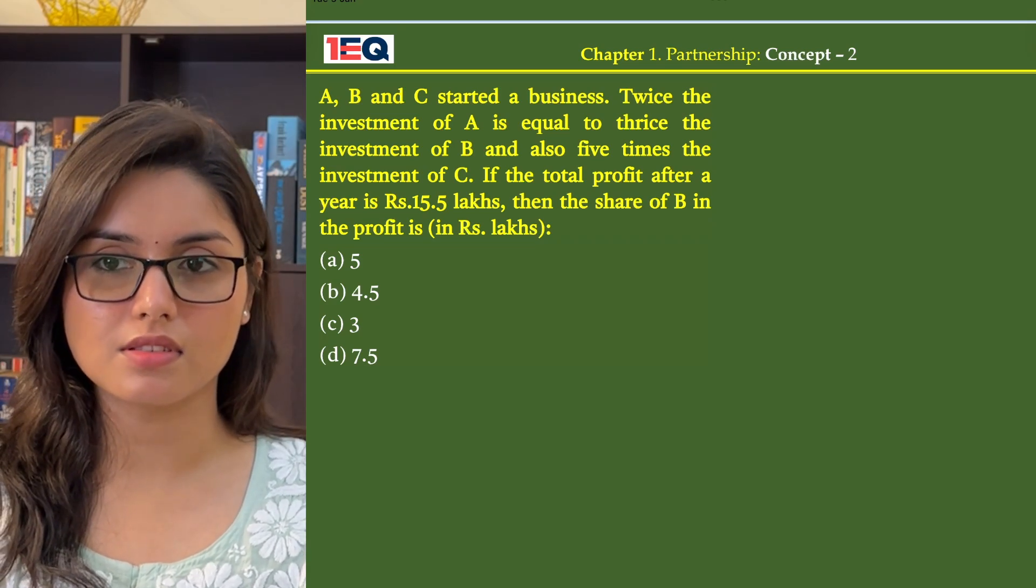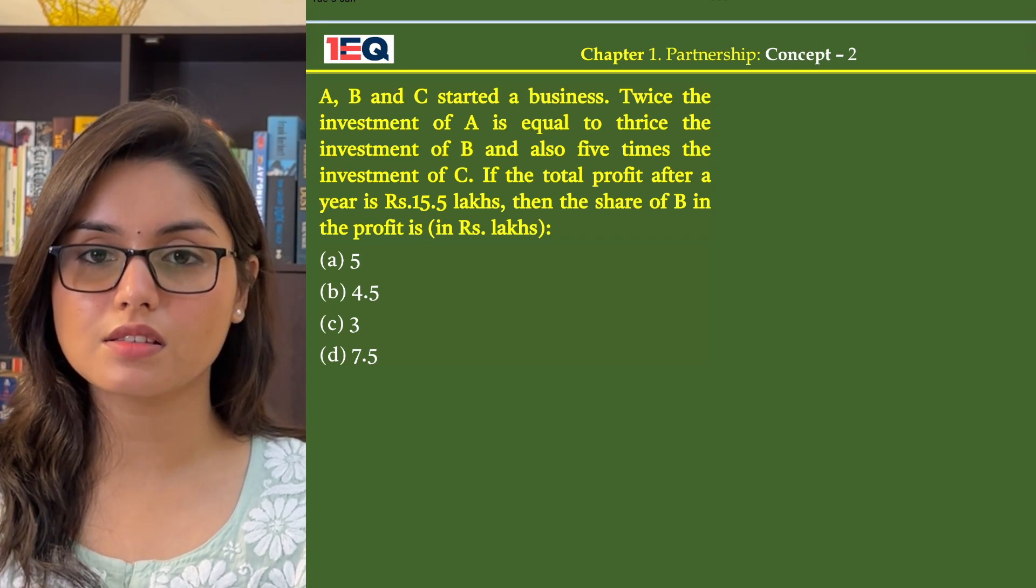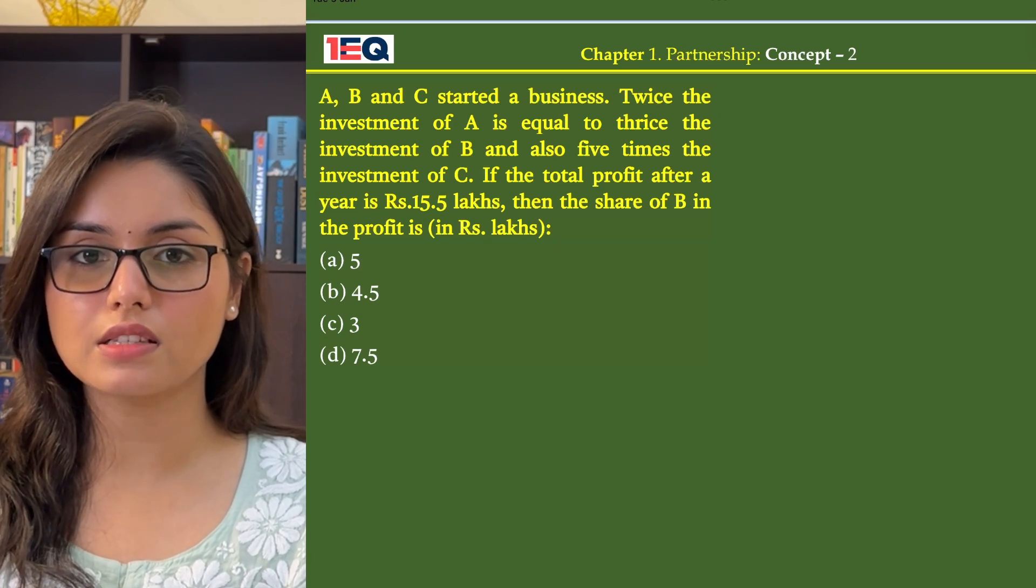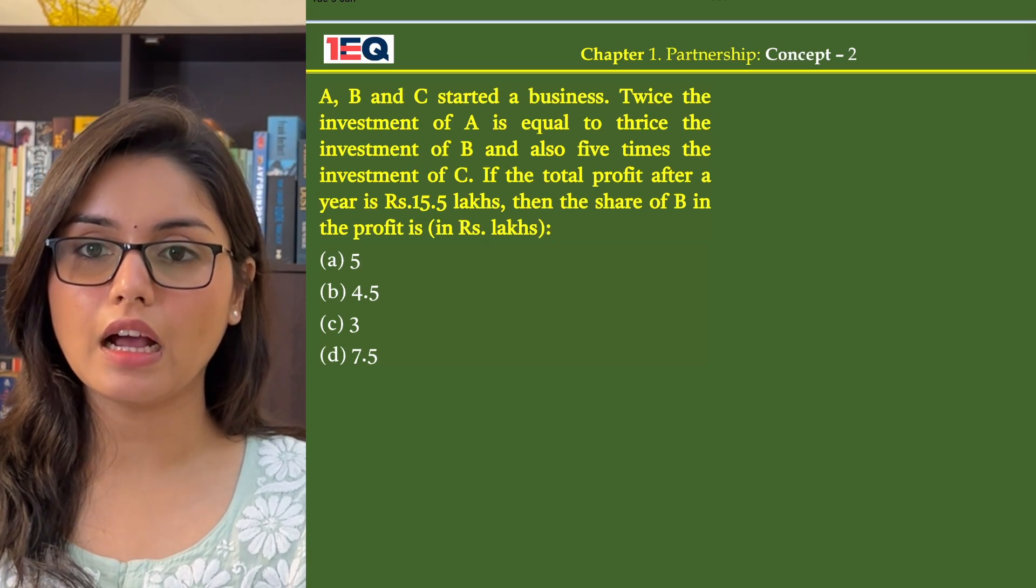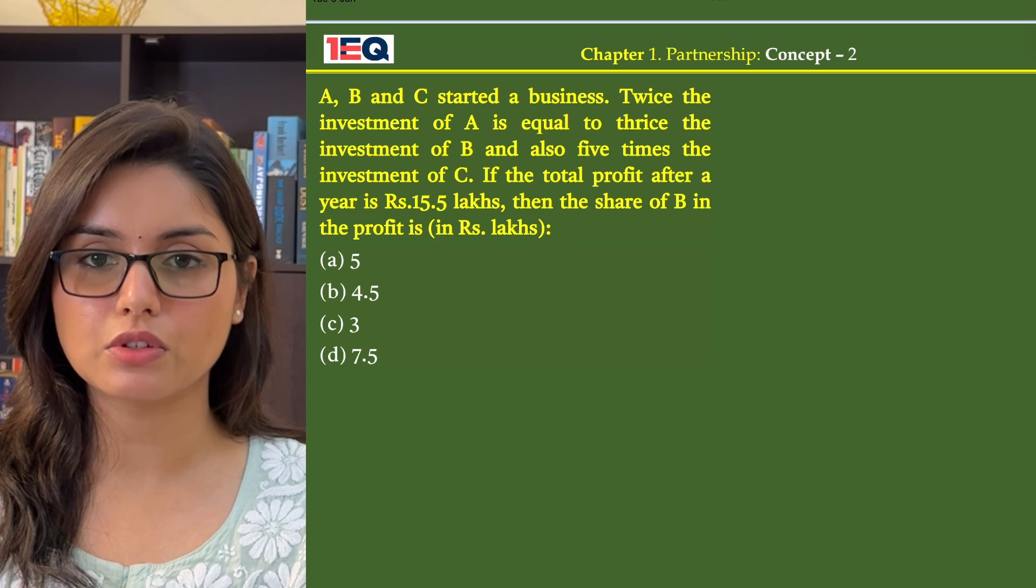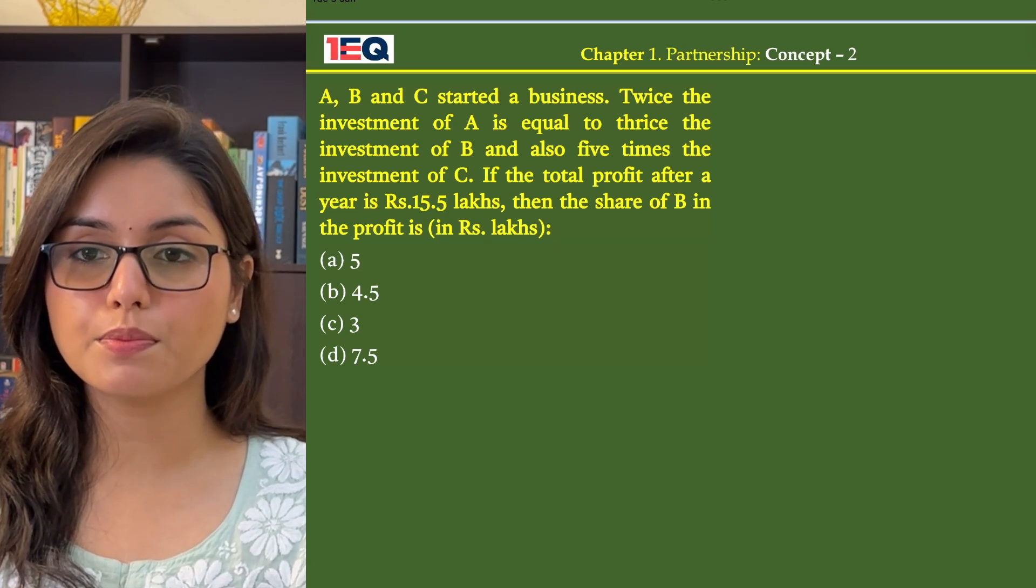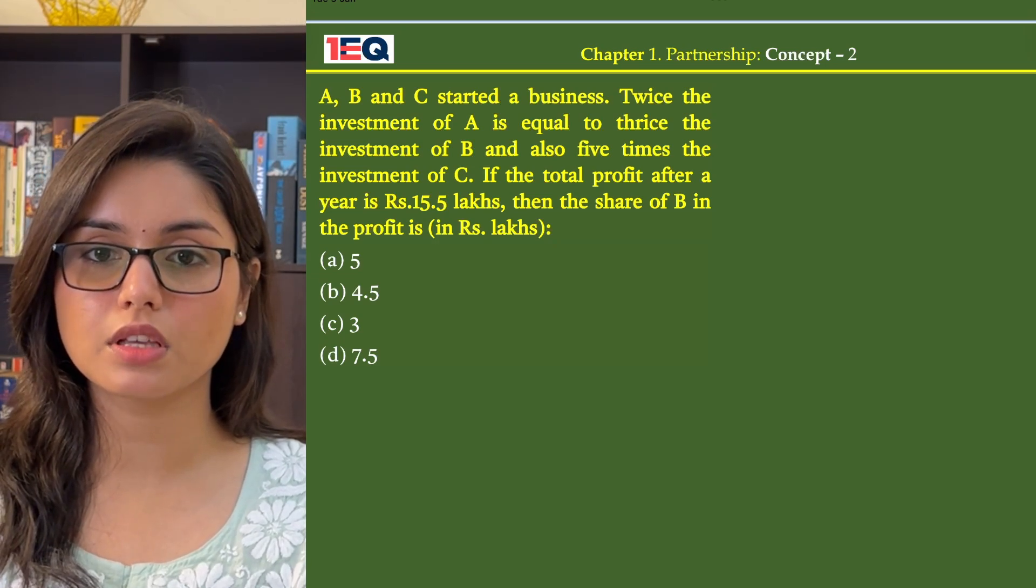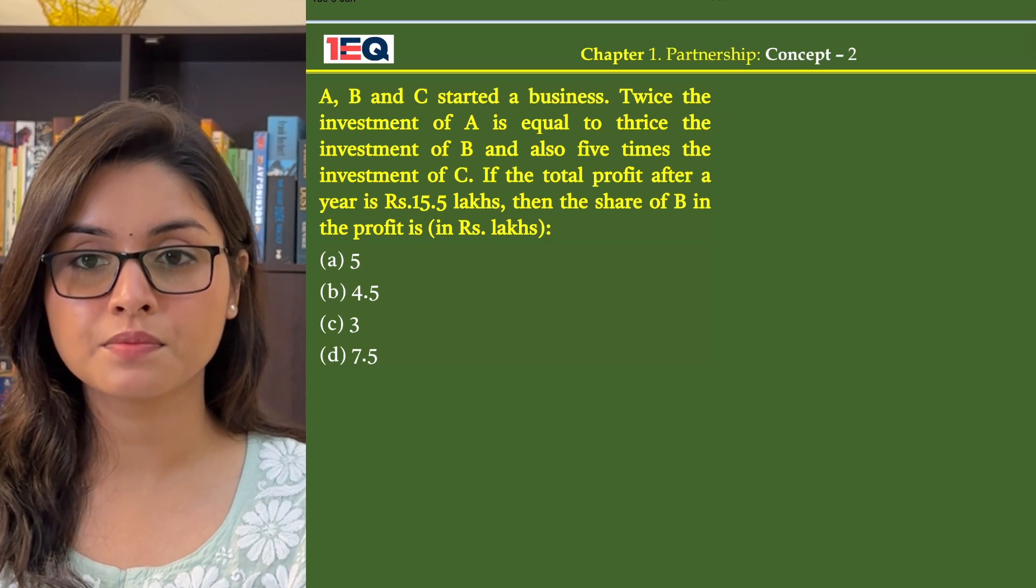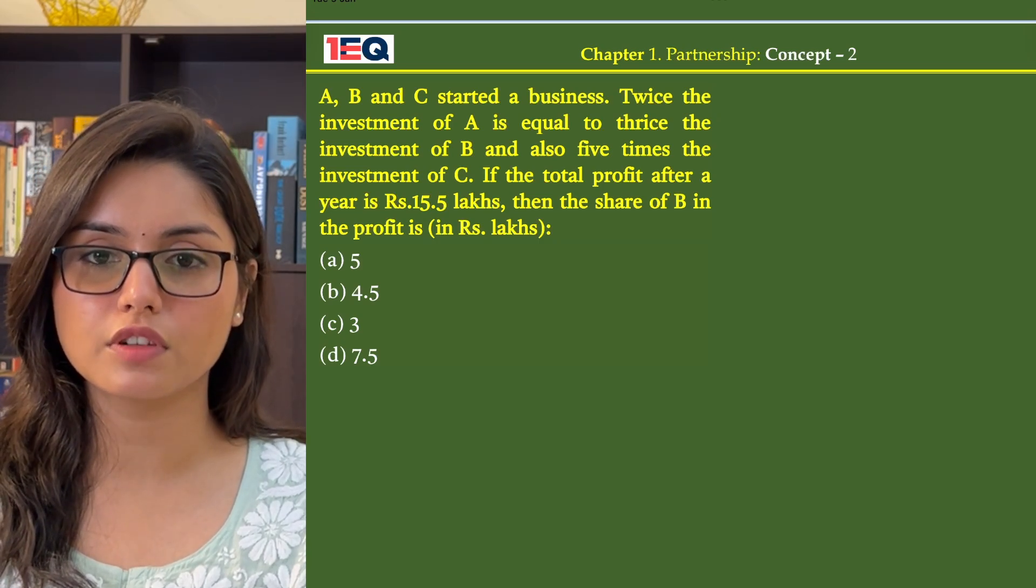A, B, and C started a business. Twice the investment of A is equal to thrice the investment of B and also five times the investment of C. If the total profit after a year is Rs 15.5 lakhs, then the share of B in the profit is.